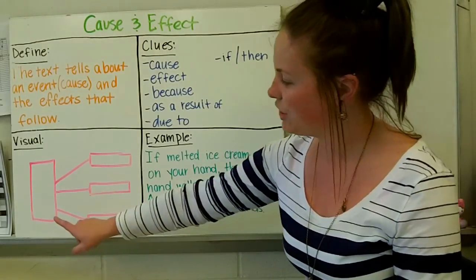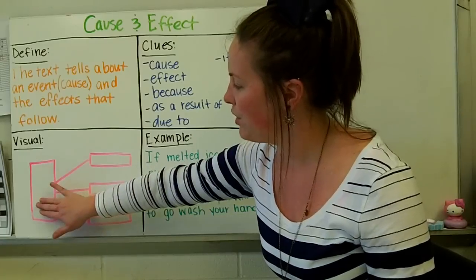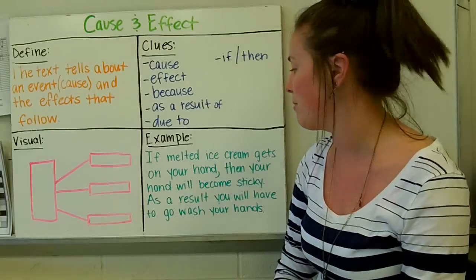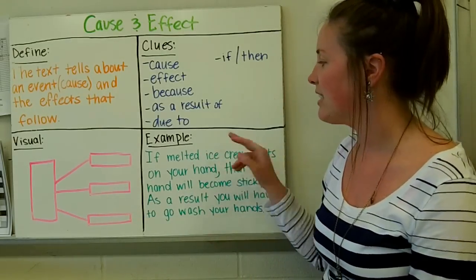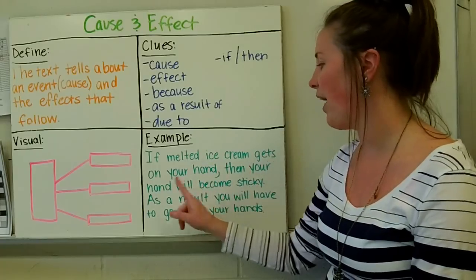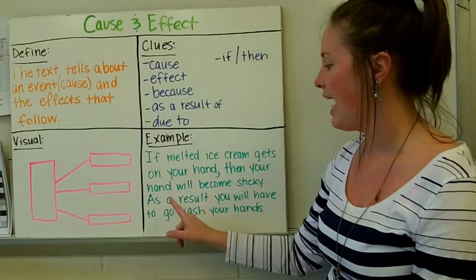A visual that you could use, or a graphic organizer, would be where you put the cause in this box and tell the different effects that comes from it. Here's our example. If melted ice cream gets on your hand, then your hand will become sticky. As a result, you will have to go wash your hands.